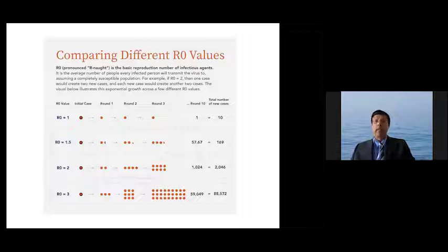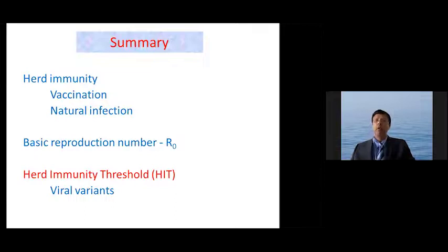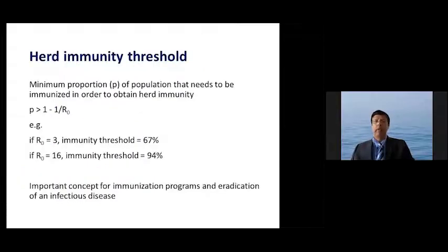So what is herd immunity threshold? It's the minimum proportion of the population that needs to be immunized or immune in order to obtain herd immunity. So the proportion is 1 minus 1 over R0. So if the R0 is 3, that is 1 minus 1 third, it's 2 thirds and 67 percent.